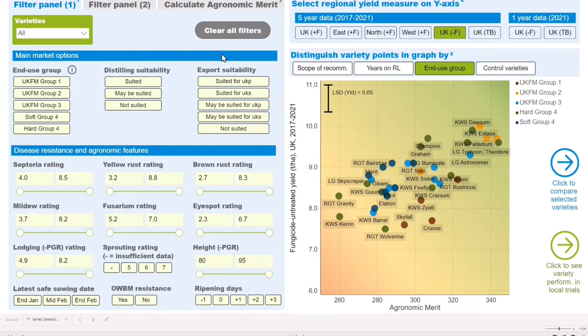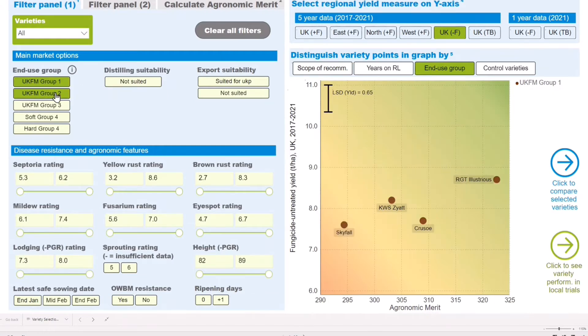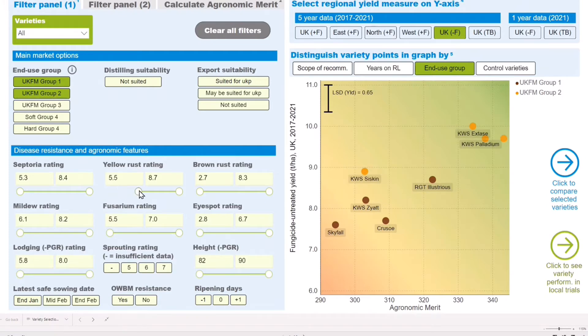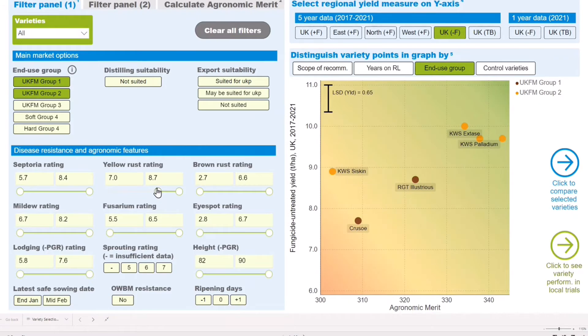Here I can show you how the chart changes if we select varieties that are either UKFM Group or Group 1 or Group 2 with a yellow rust rating of at least 7. Varieties that meet your entered criteria showing the chart on the right.